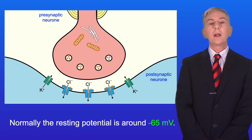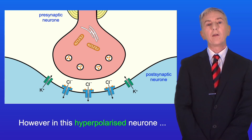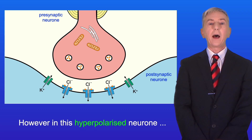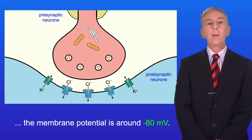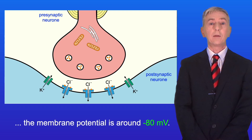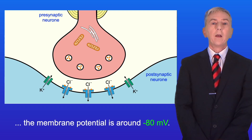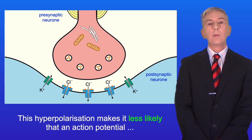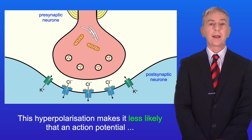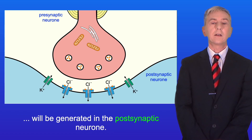Normally the resting potential is around minus 65 millivolts. However, in this hyperpolarized neuron the membrane potential is around minus 80 millivolts. This hyperpolarization makes it less likely that an action potential will be generated in the post-synaptic neuron.